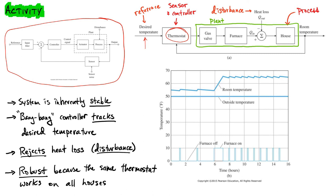Overall, the plant — the system that's operating — includes the house, which is really where the dynamics are: the heat leaking out through windows, cracks, and everything else. That's modeled by a disturbance: the heat loss. The actuator is the combination of the gas valve and the furnace — that injects heat into the house. The sensor reads the actual room temperature, and that sensor could also have some noise, though we haven't put that into the model here.